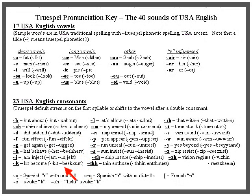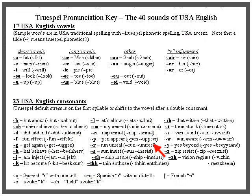K: 'kit' and 'become' — 'come' is stressed. L: 'let' and 'allow' — 'low' is stressed. M: 'my' and 'amend' — 'men' is stressed. N: 'nap' and 'annul' — 'null' is stressed. P: 'pen' and 'appear' — 'peer' is stressed. R: 'unreal' — 'real' is stressed. S: 'sun' and 'consist' — 'sist' is stressed. SH: 'ship' and 'ensure' — 'sure' is stressed.